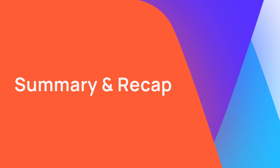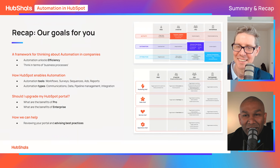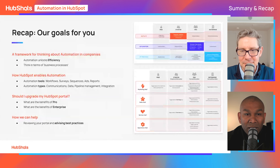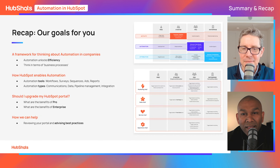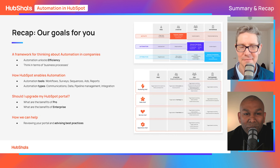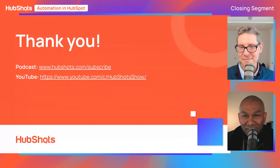Here's what we covered: a framework for thinking about automation in businesses, recognizing that automation unlocks efficiency and that you should think in terms of business processes. How HubSpot enables automation through tools like workflows, surveys, sequences, ads, and reports — covering communication, data, pipeline management, and integration. And we discussed whether you should upgrade your portal, the benefits of upgrading to professional, and the benefits of upgrading to enterprise. Thank you to all our listeners — please put any comments below and we'll get back to you. Until next time.